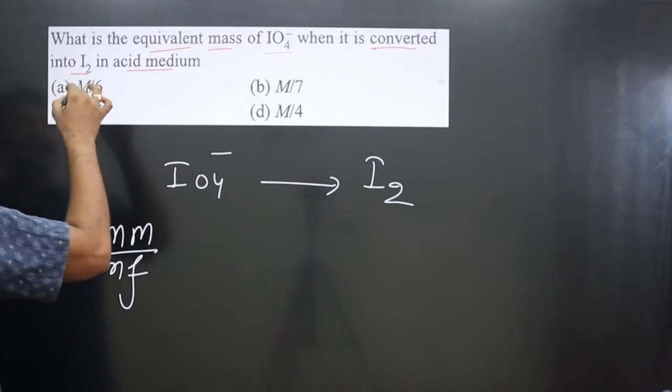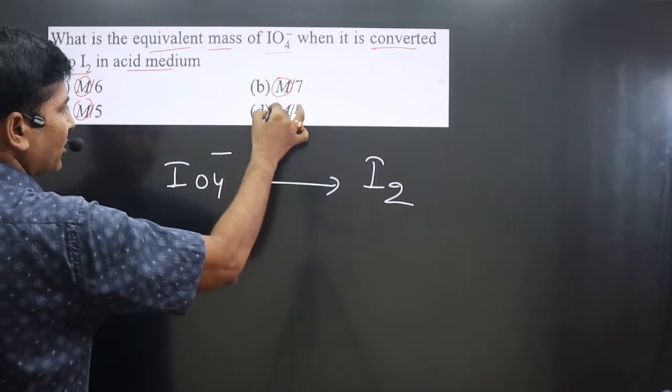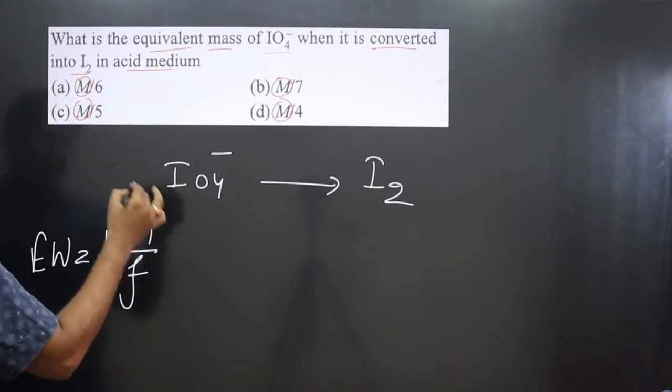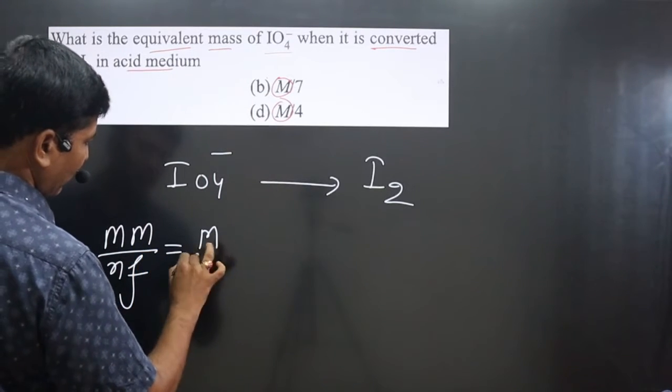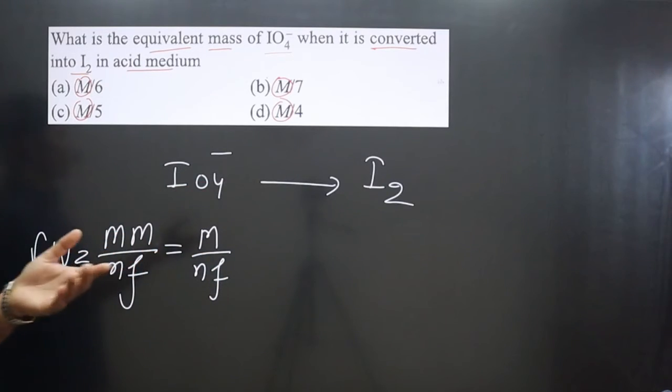Looking at the options, molecular mass is given as M, so we don't need to calculate it using the periodic table. We can write molecular mass M divided by n-factor. To calculate the n-factor value, we write down the oxidation numbers of iodine on both sides of the